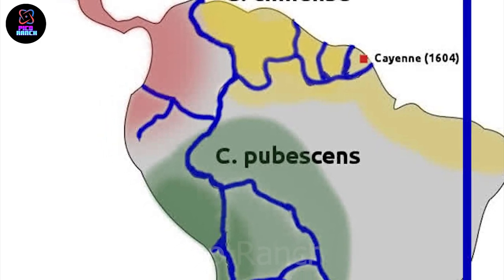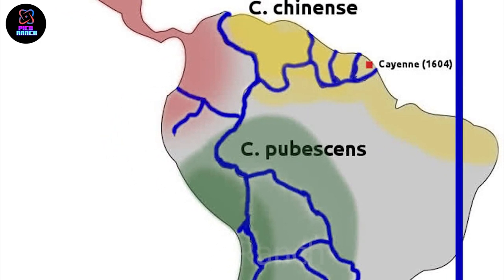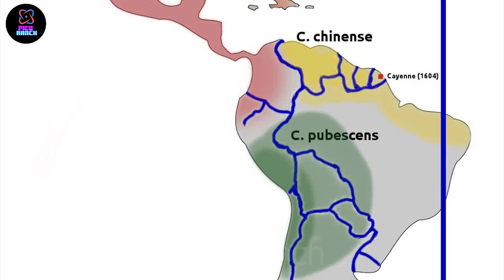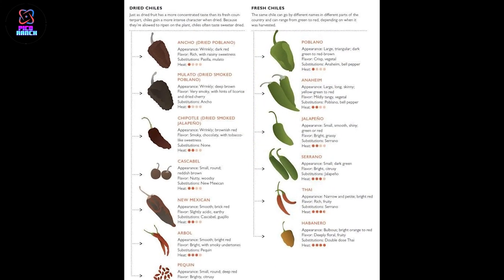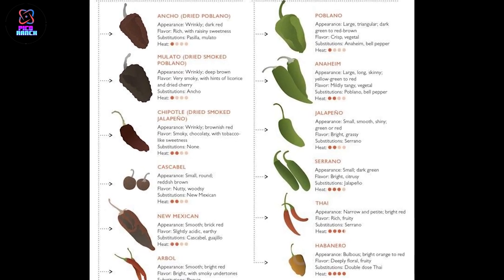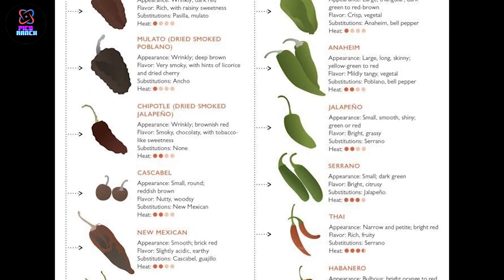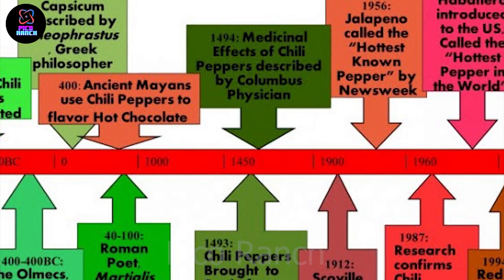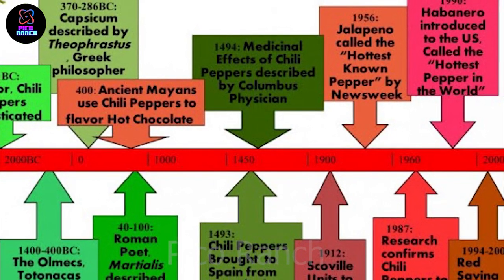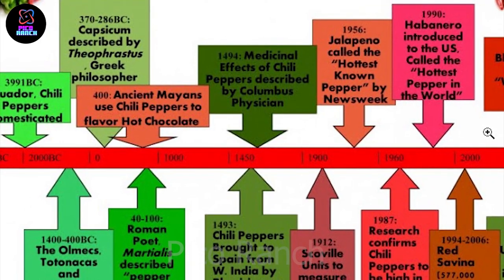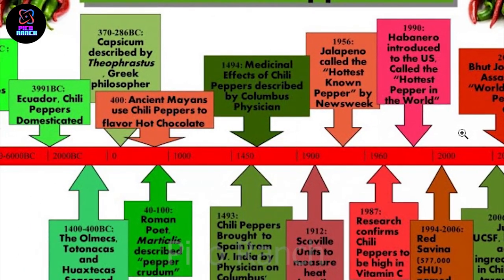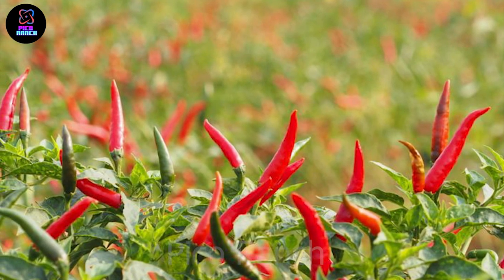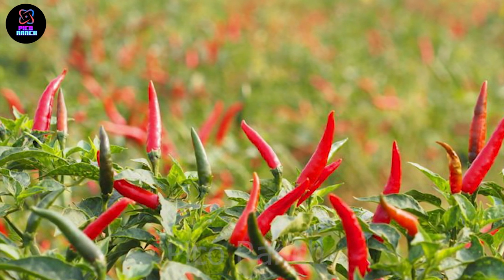Chili peppers belong to the Solanaceae family and Capsicum genus. The origin of chili peppers can be traced back to the Latin American region, especially Mexico. Indigenous people in Latin America had been using chili peppers for thousands of years before Europe encountered them after Christopher Columbus's discovery in the 15th century. Over time, chili peppers have diversified and undergone selective breeding, resulting in various types with different flavors and levels of spiciness.